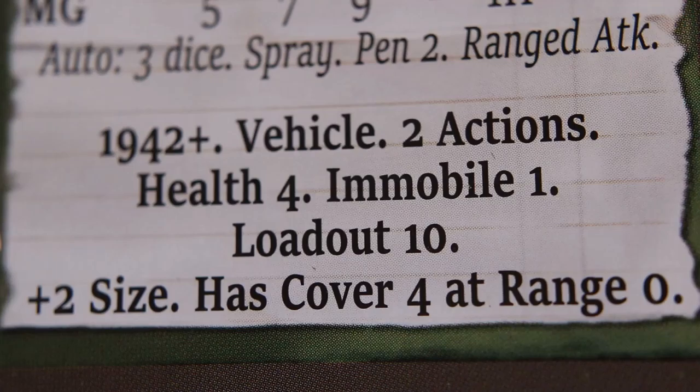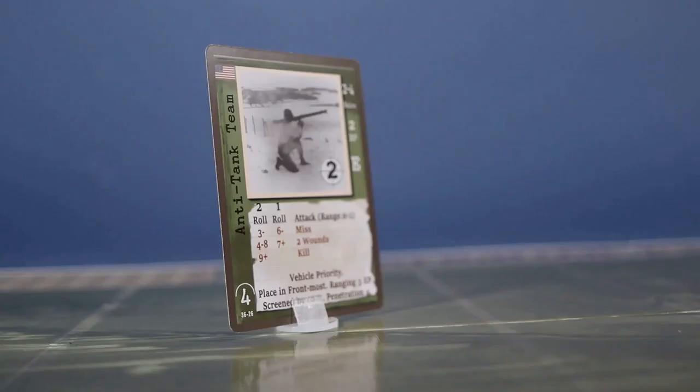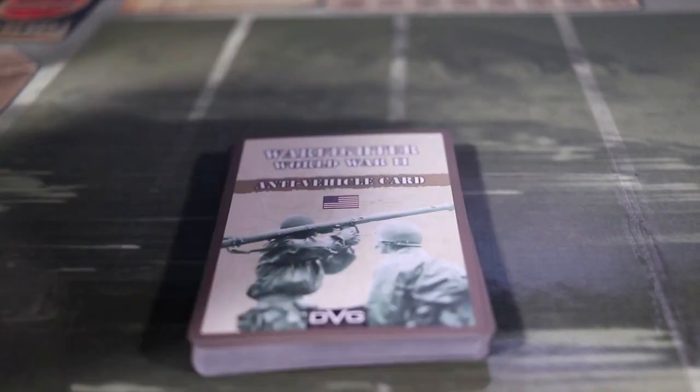Anti-vehicles are hostiles which appear when you have tanks or squad vehicles in your team. You create a separate anti-vehicle deck and draw from it during the hostile reinforcement phase.